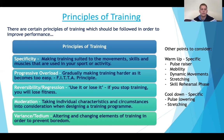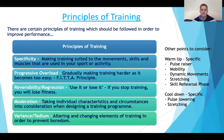Progressive overload is probably the most important principle — we're going to progress the training each week. Regression or reversibility is the 'use it or lose it' principle — if he's not training, he'll get unfit, so we make sure he sticks to the plan. Moderation is about his circumstances — he's 16 and club level, so we're not making him train five times a day. Variance and tedium: we alter the training to keep it as exciting and engaging as possible, because doing the same exercise over and over again gets boring.